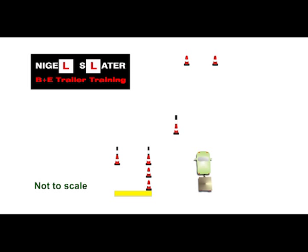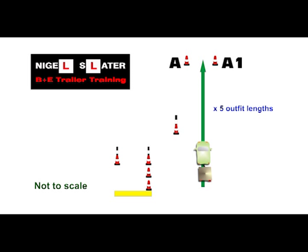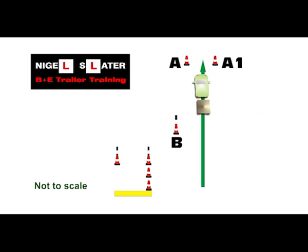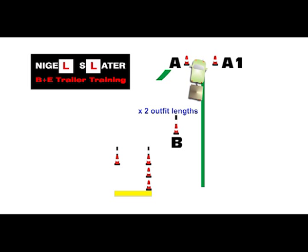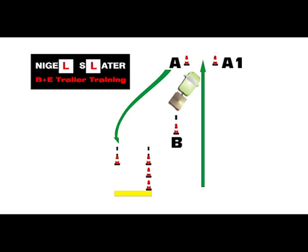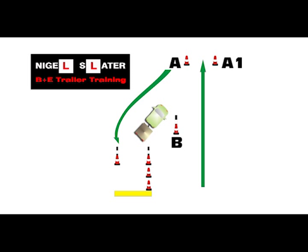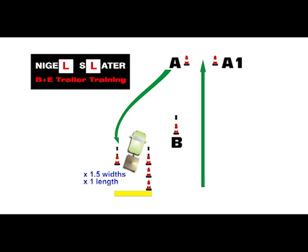The candidate is required to drive the outfit forward to cones A and A1, which is 5 times the length of the outfit, then reverse the trailer to the left-hand side of cone B — that's keeping cone B to the right — reversing into the bay specified by the markers and keeping the trailer inside the cones, finishing with the trailer in a specified area at the back of the bay.